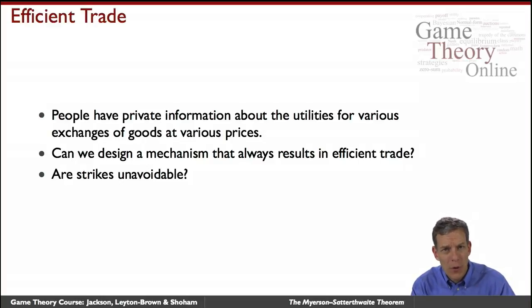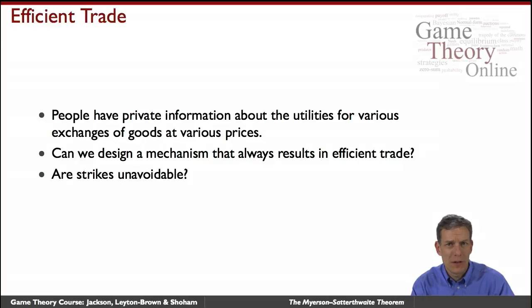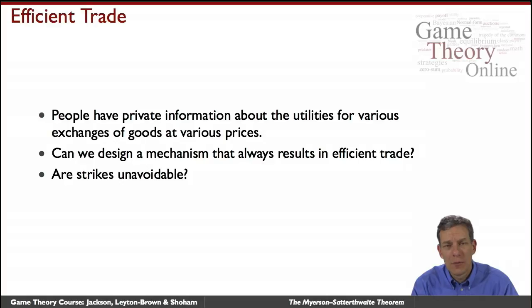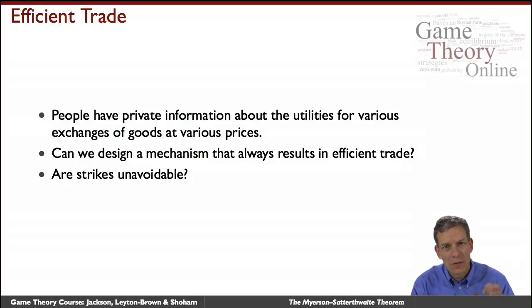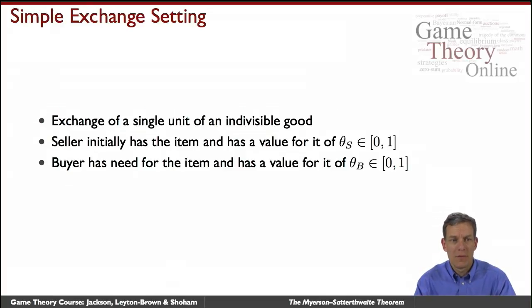We're going to look at a very simple trade setting, and even in that simple setting we'll see difficulties in getting efficient trade. This is a very important and fundamental result from game theory and mechanism design in terms of understanding why we have breakdown in bargaining and why we don't always get efficient outcomes.